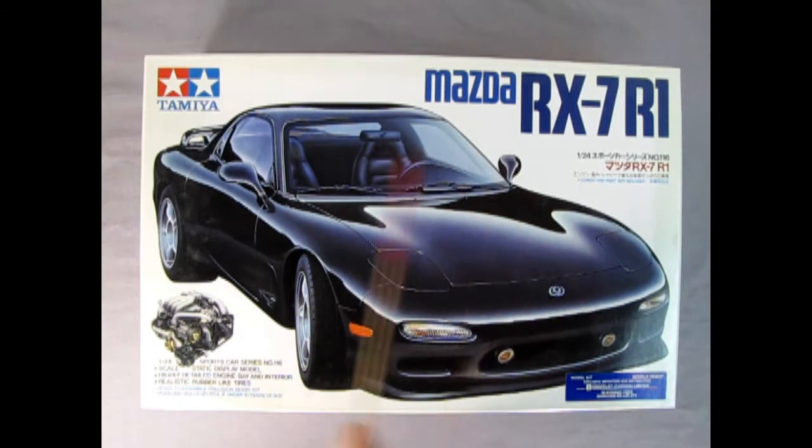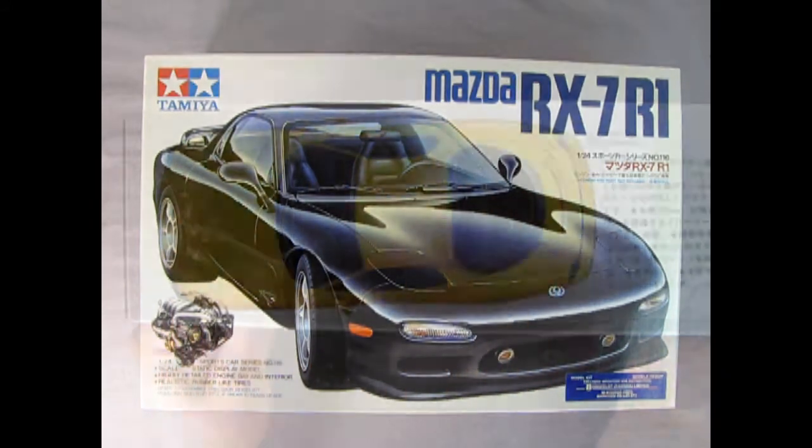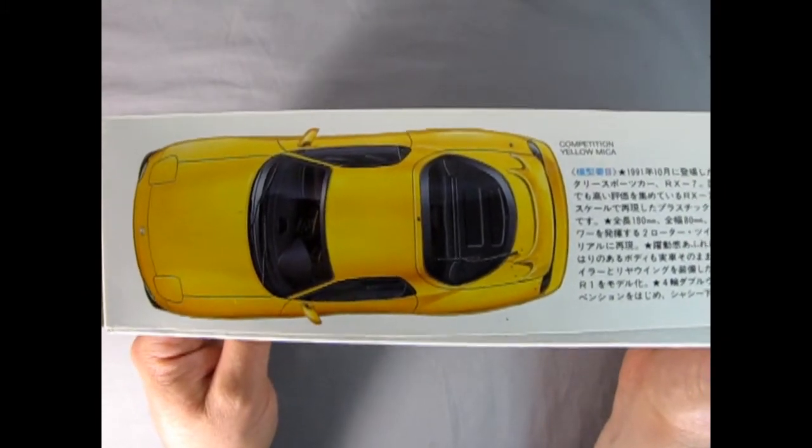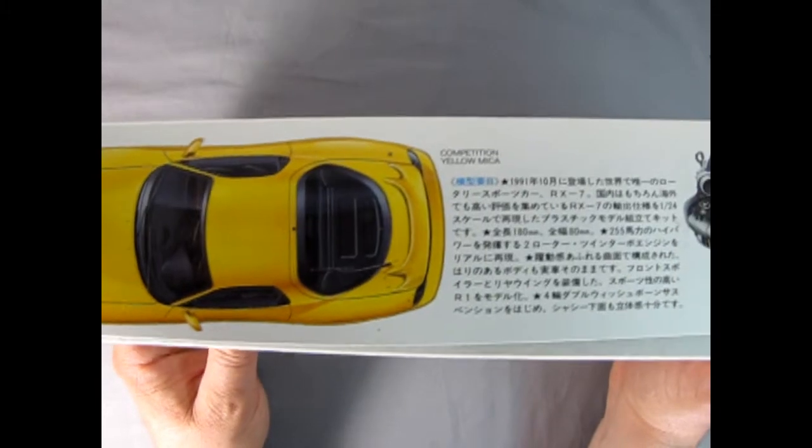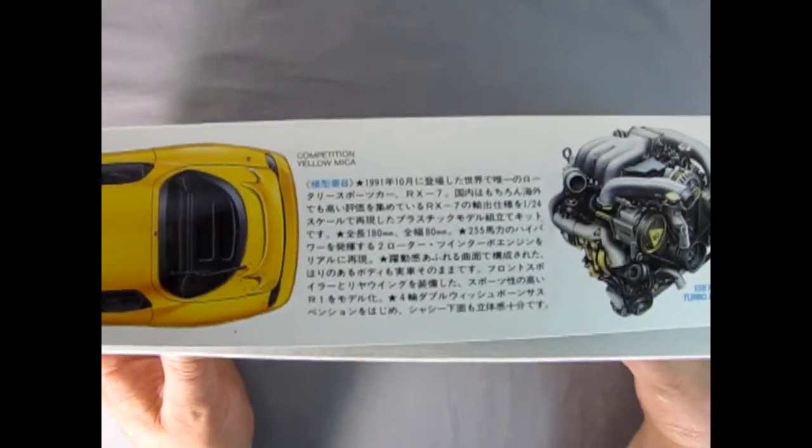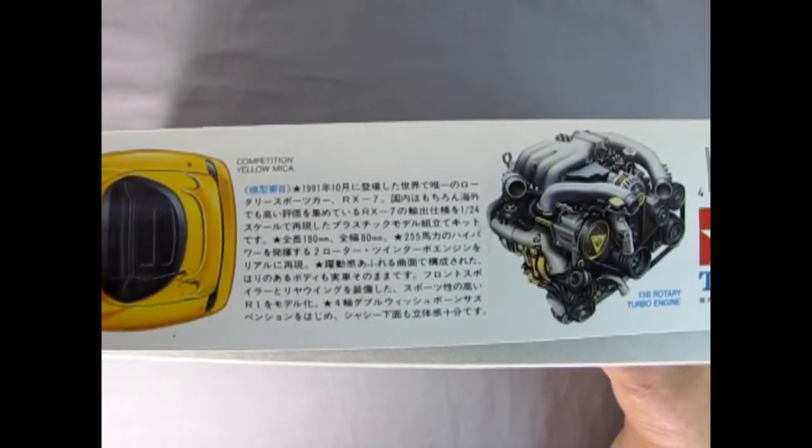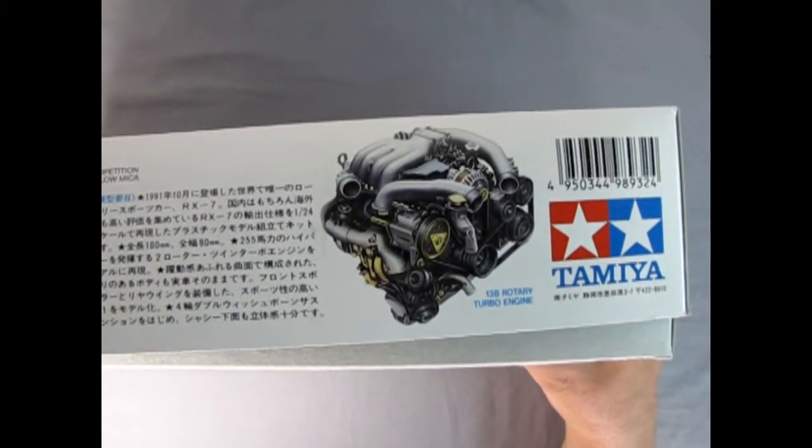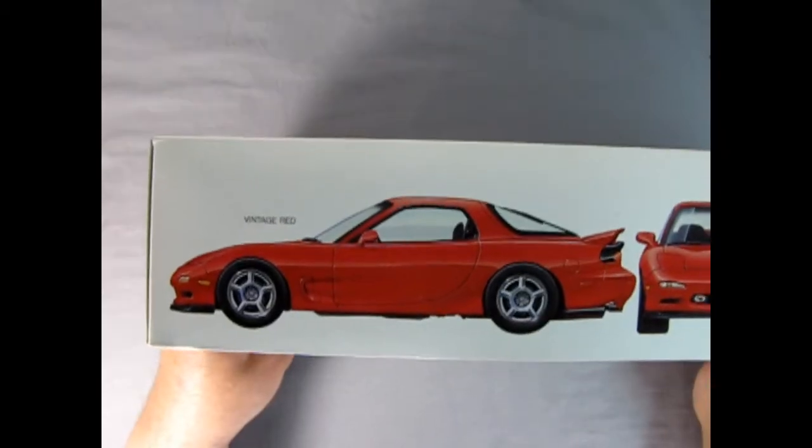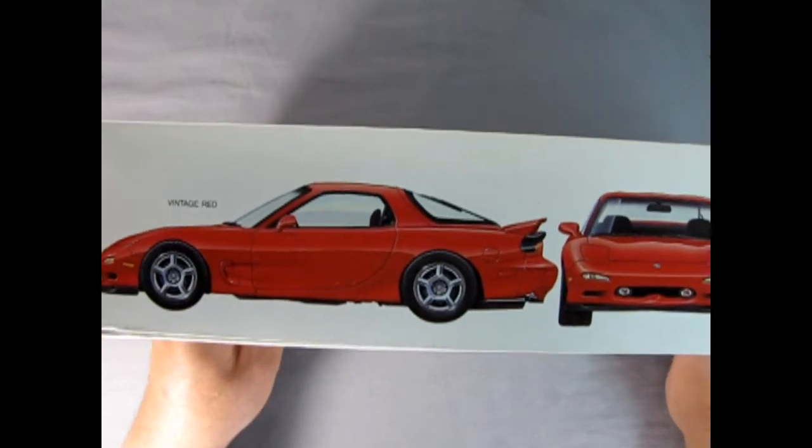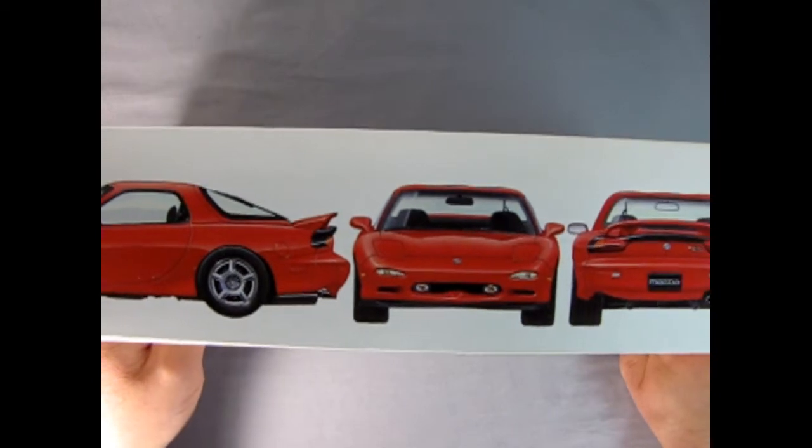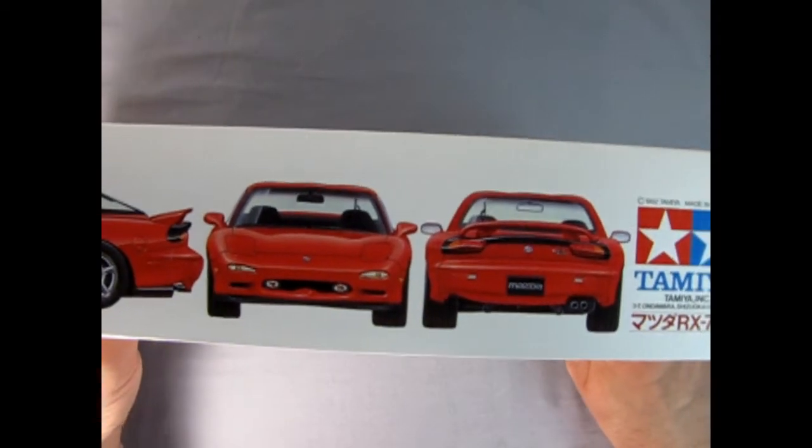We get this really nice drawn-out image and an image of the motor. On this side of the box we see a wonderful top view of our Mazda model kit painted in yellow. Then we get specifications written in Japanese and our wonderful 13B rotary turbo engine. Turning the box to the other side we can see a wonderful red Mazda with side view, front view, and rear view.